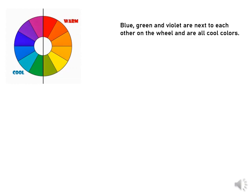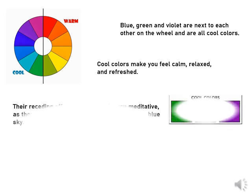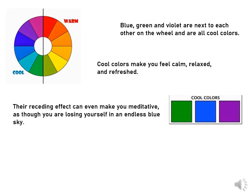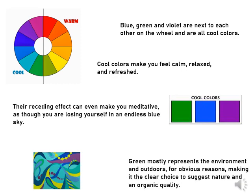Blue, green and violet or purple are next to each other on the color wheel and are all cool colors, as you can see in these pictures. Cool colors make you feel calm, relaxed and refreshed. The receding effect can even make you meditative, as though you are losing yourself in an endless blue sky. Green mostly represents the environment and outdoors, making it a clear choice to suggest natural and organic qualities.